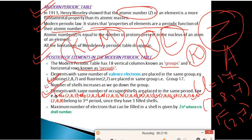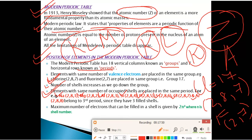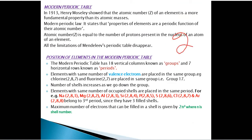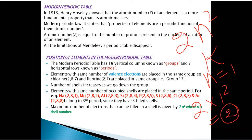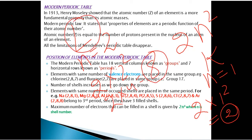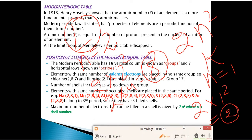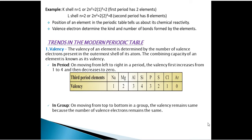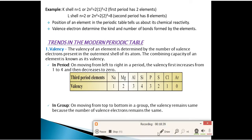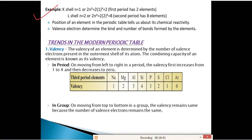The maximum number of electrons that can be filled in a shell is given by the formula 2N², where N is the shell number. For the K shell (N=1): 2×1² = 2 electrons. For the L shell (N=2): 2×2² = 8 electrons. So K shell holds a maximum of 2 electrons and L shell holds a maximum of 8 electrons.